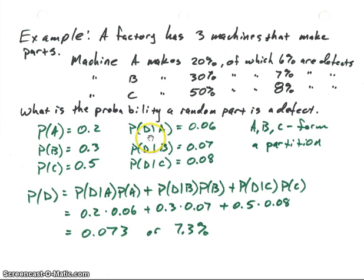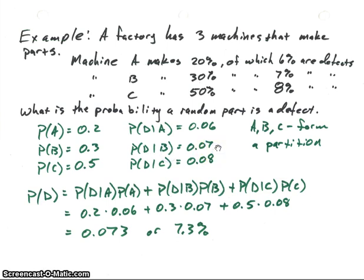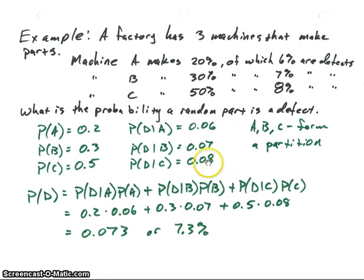For the defect probabilities: the probability of a defect given A made the part is 6%, or 0.06; given B made the part is 7%, or 0.07; and given C made the part is 8%, or 0.08. Machines A, B, and C form the partition, and these are the conditional probabilities for our defect set D across all partition sets.